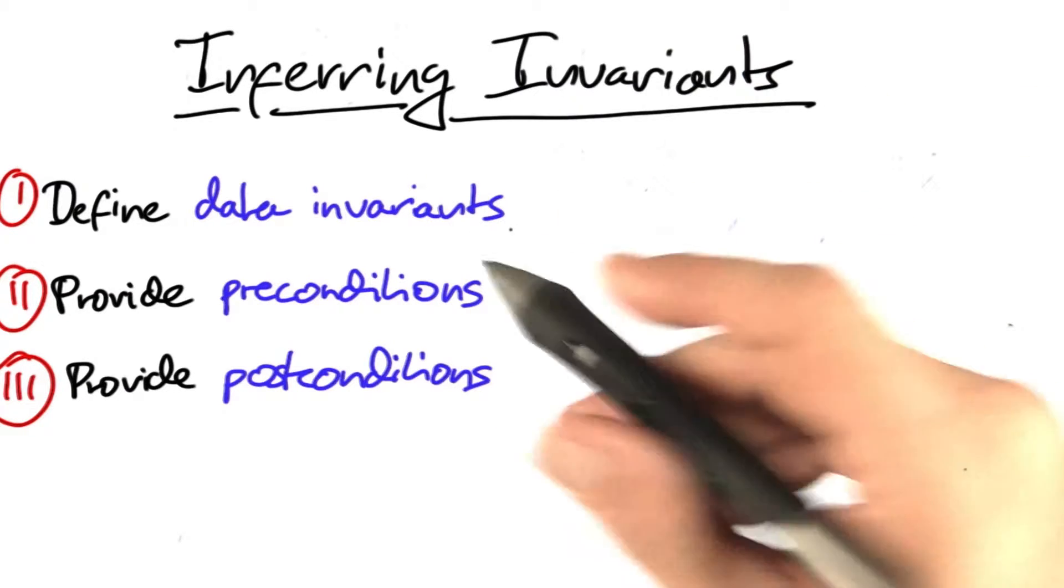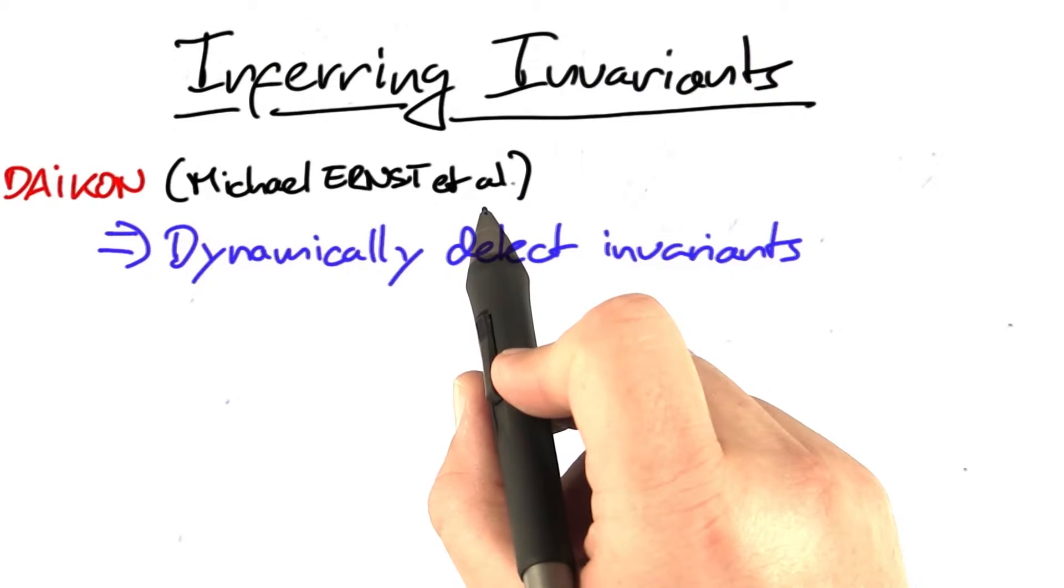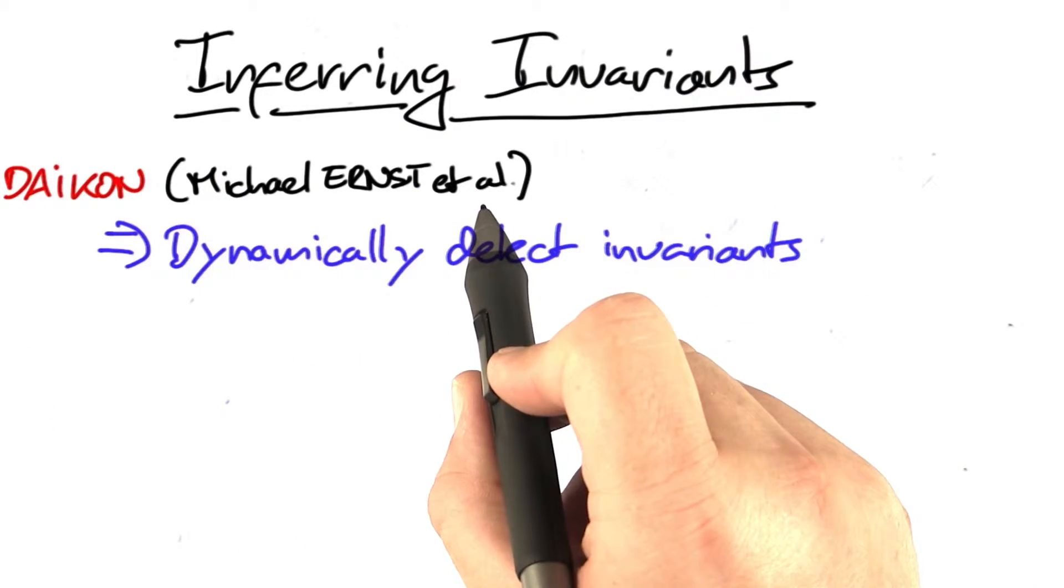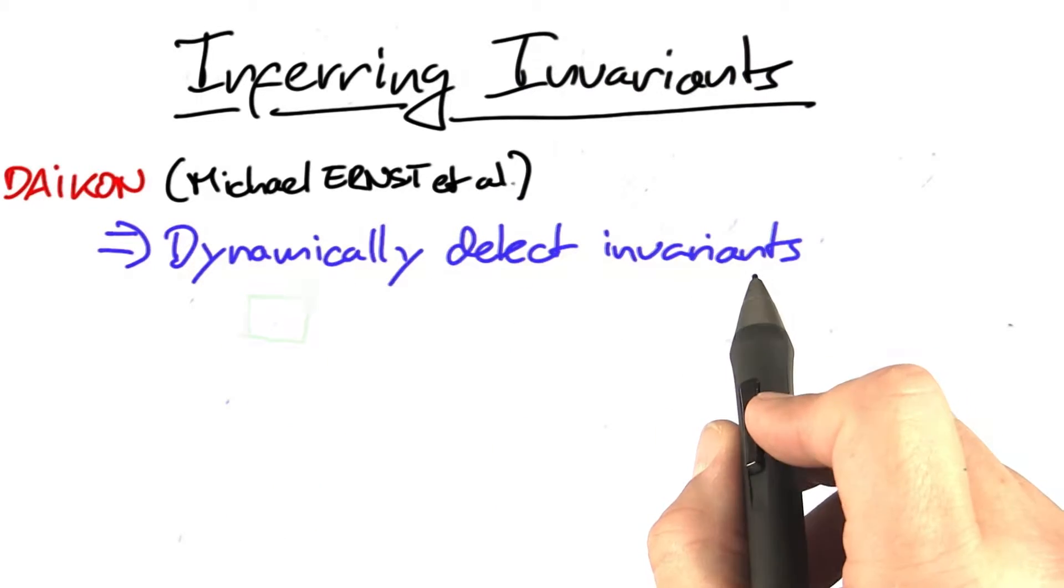I'm going to show you how such tools work and explore how to build one. The Daikon tool by Michael Ernst and colleagues dynamically detects invariants from program runs.